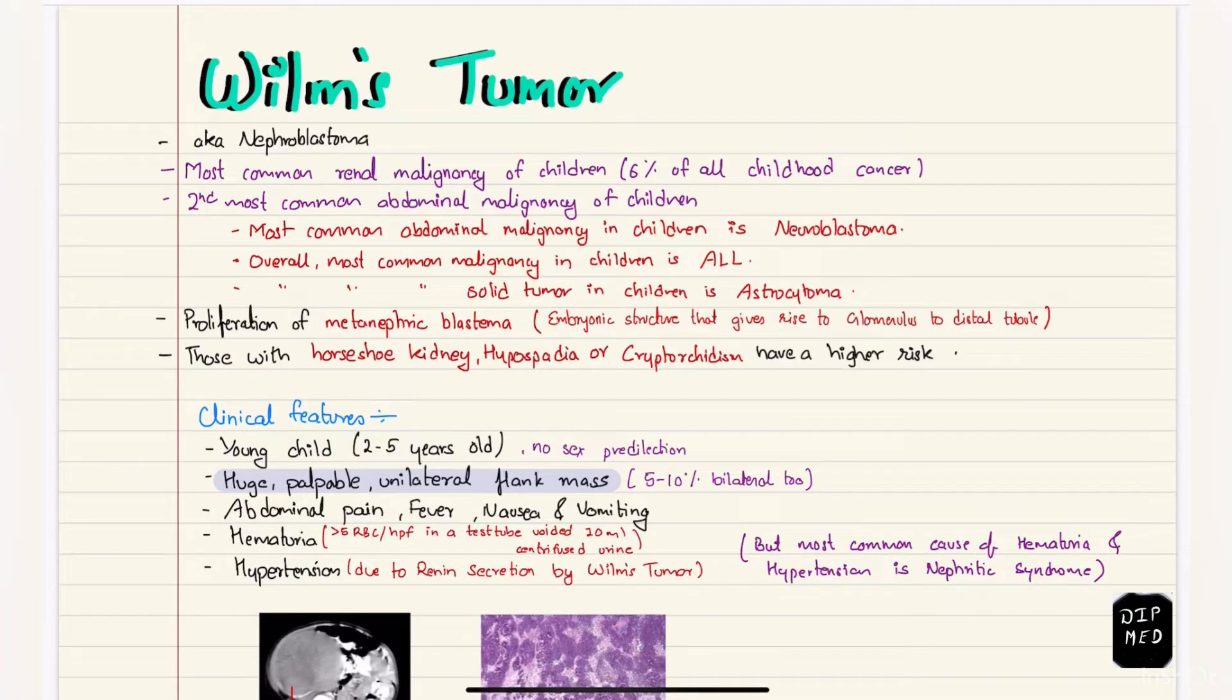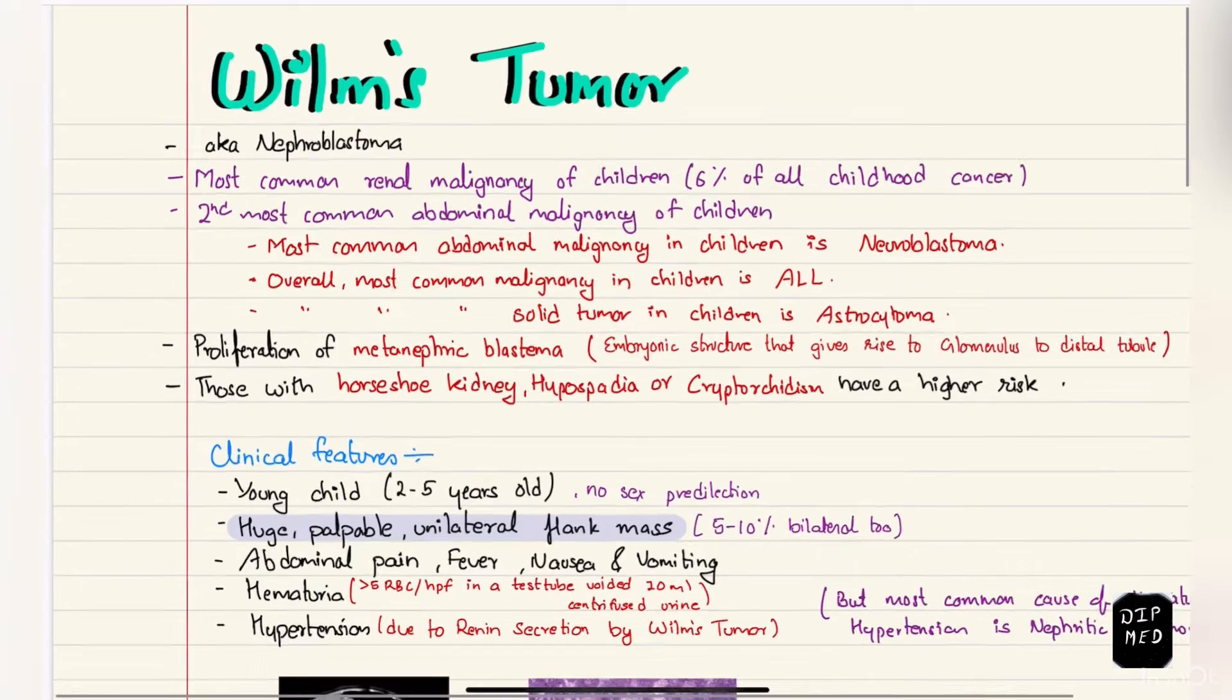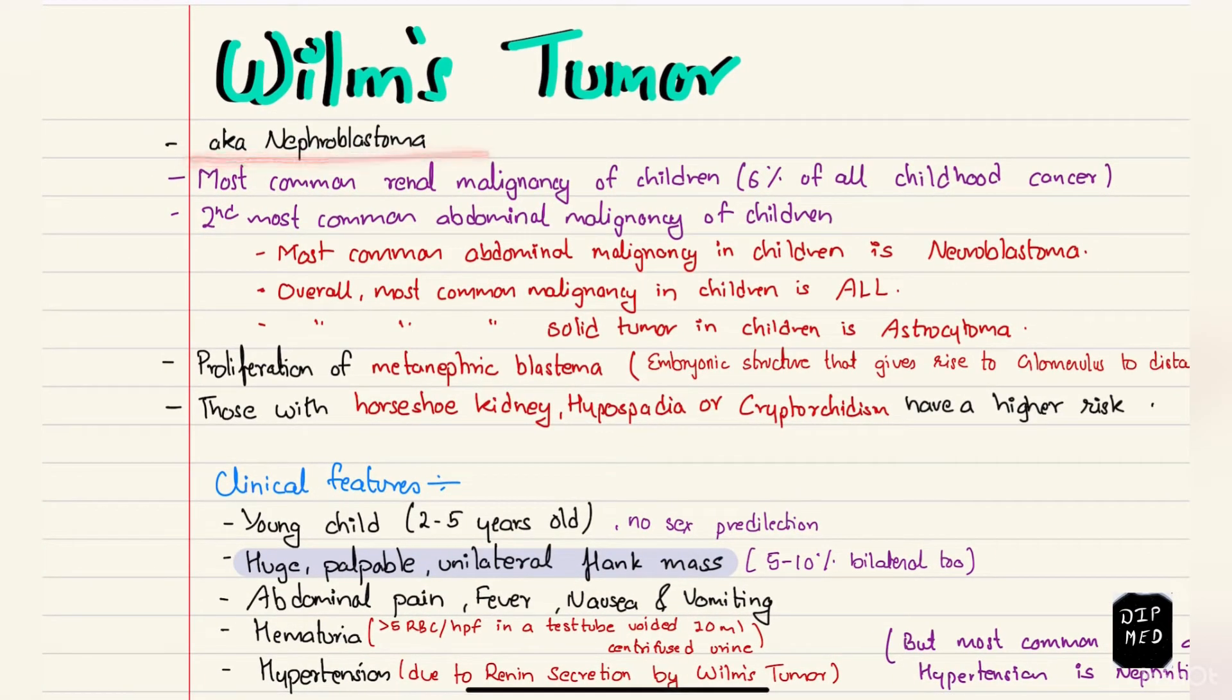Hello everyone, this video is about Wilms tumor. Wilms tumor is a tumor of the kidney, also known as nephroblastoma. It is the most common renal malignancy of children and accounts for around 6% of all childhood cancer.